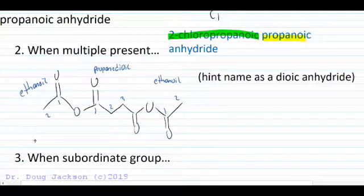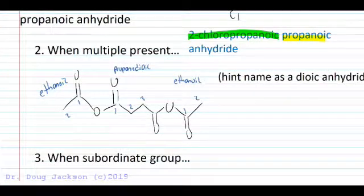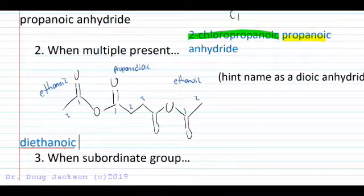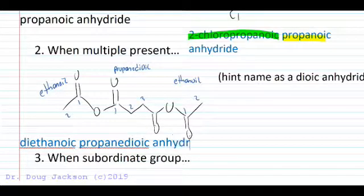So instead, here for the full name, we would have in alphabetical order, a diethanoic propanedioic anhydride.